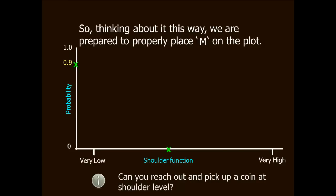I'm going to make a guess of about 0.9 for M. Now that guess is not as high as my guess for VH, very high. But it's a lot higher than my guess for VL, very low shoulder functioning. Once again we combine the information and place M on the plot.